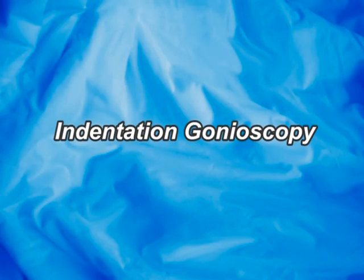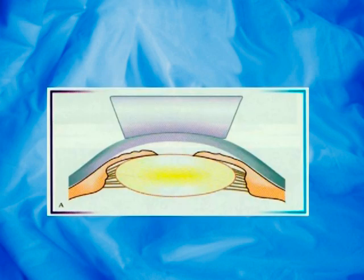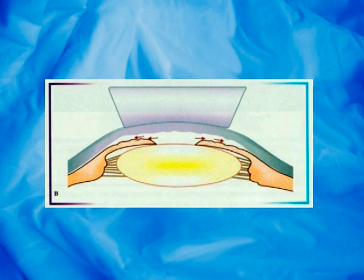Indentation gonioscopy differentiates appositional angle closure from synechial angle closure. This is done using a corneal type of goniolens. Here we can see the angle is not initially visible. The corneal type goniolens is pressed against the cornea, which displaces aqueous into the angle — the angle becomes visible in appositional angle closure but not in synechial angle closure.